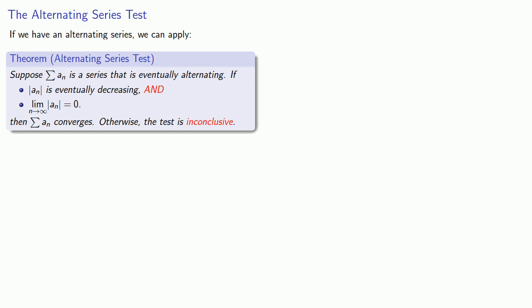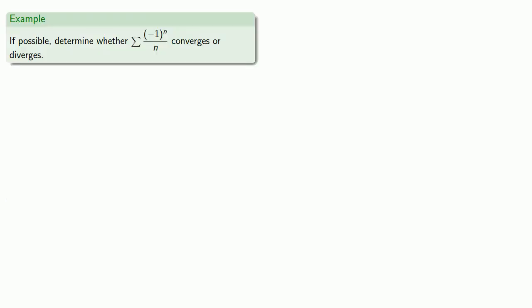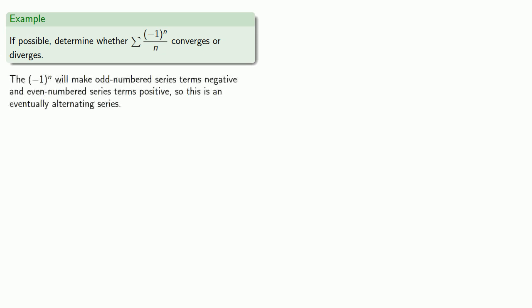An important thing to remember is that the alternating series test only applies to alternating series. Let's determine whether the series (-1)^n / n converges or diverges. The (-1)^n makes odd-numbered terms negative and even-numbered terms positive, so this is an eventually alternating series — the 'eventually' being right now — and we can apply the alternating series test.